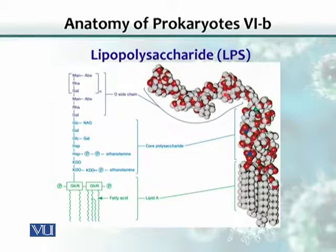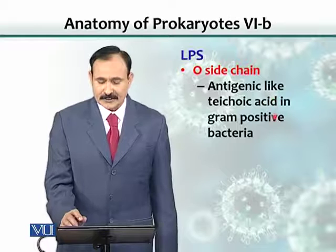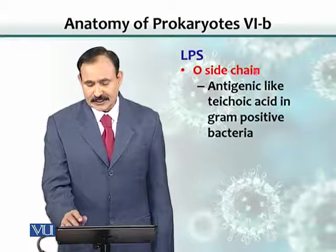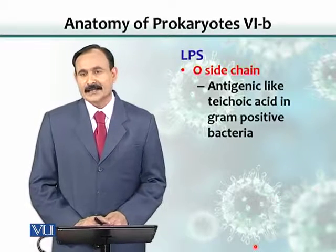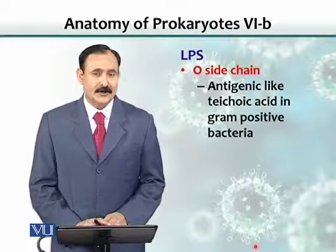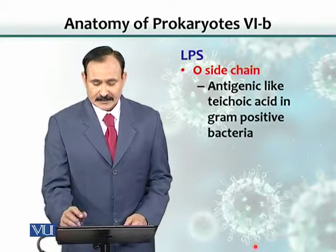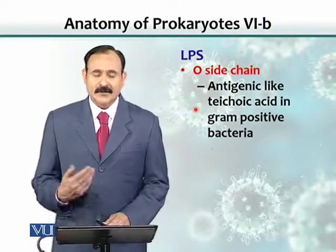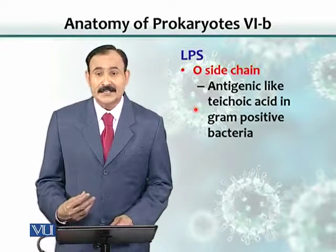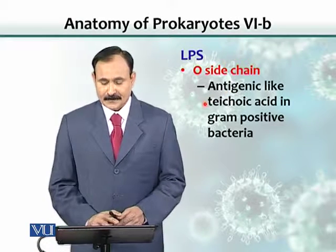The third part is the O-antigen chain. The O-antigen chain is antigenic, much like teichoic acid in gram-positive bacteria. This O-antigen chain varies from species to species of gram-negative bacteria, and much like flagellin, it can be used for bacterial identification because it is antigenic. Antigenic means that when injected into the body, it mounts an immune response, makes antibodies, and those antibodies react with the antigen.